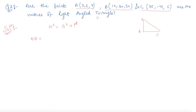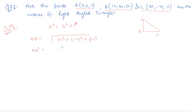Let's find AB. Using the distance formula: 10 minus 3 squared, plus 20 minus 6 squared, plus 30 minus 9 which is 21 squared. I will directly compute AB squared, which comes out to be 686.